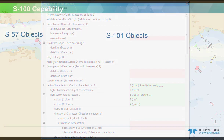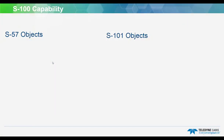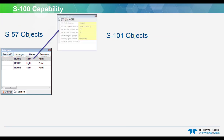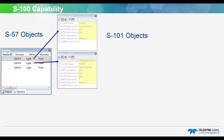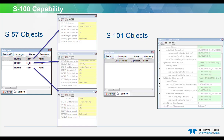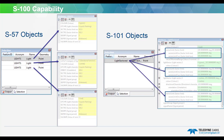An example of this can be seen with the Light Sectored feature. While the S57 standard required the creation of each individual sector as its own feature, in S101 the user is able to create one feature and define multiple sectors using attributes with multiplicity. This gives a more accurate representation of real-world features.